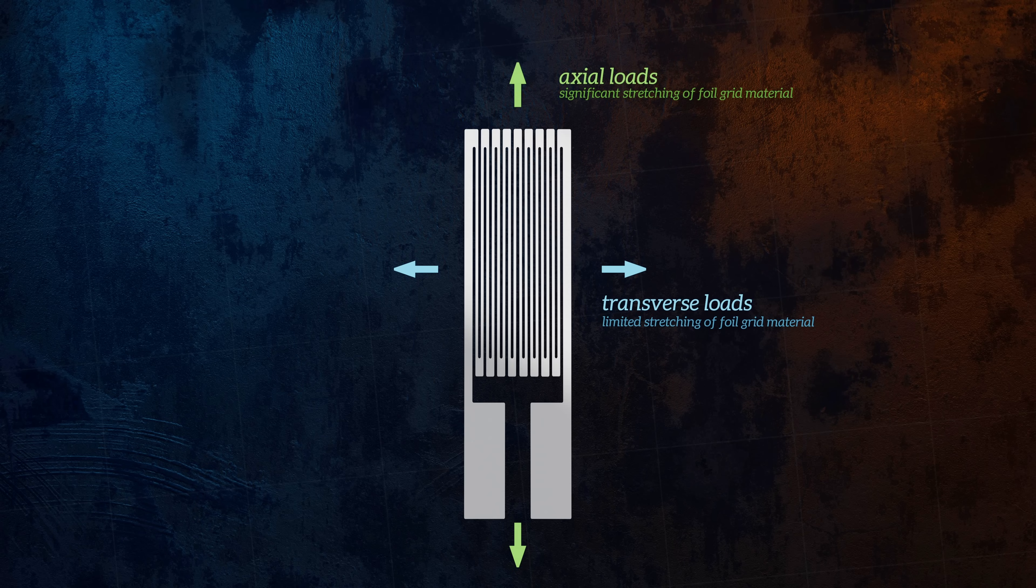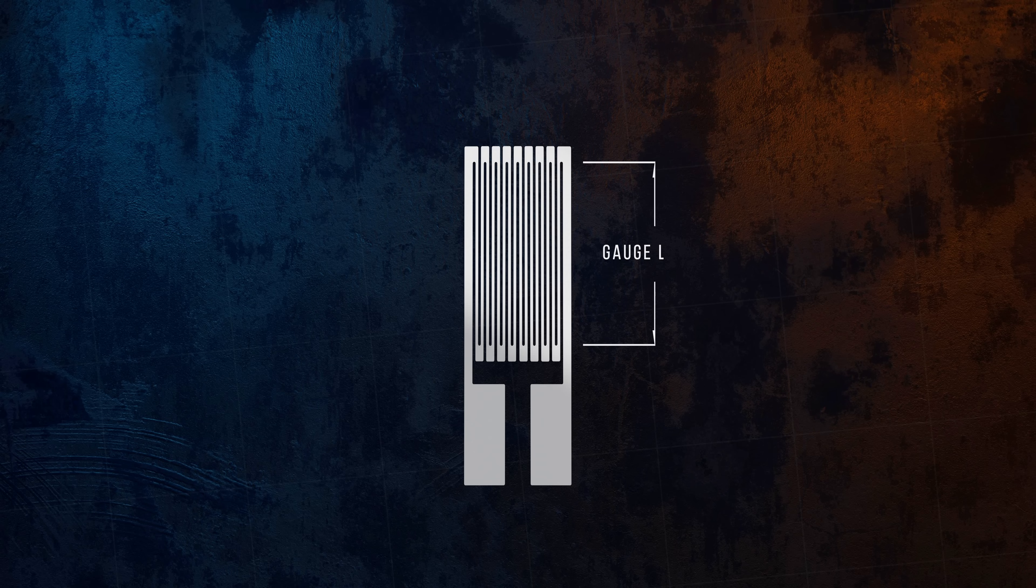The physical length of the grid, called the gauge length, is selected based on the application. The shorter the gauge length is, the more accurately it will approximate the strain at a single point, which is why most general purpose strain gauges are very small.